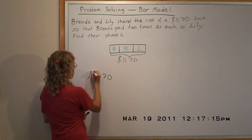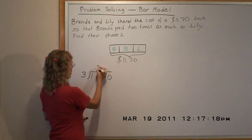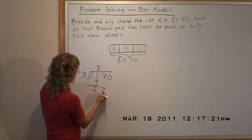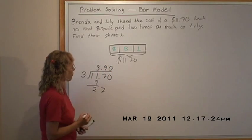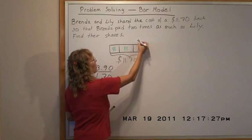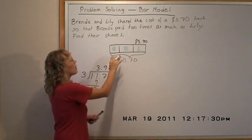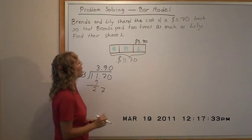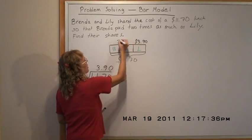Very useful. Three goes into 11 three times. Subtract — we get 2, bring down the 7 to get 27, so nine times. So this part here is $3.90, and that's Lily's share. Brenda's part would be double that, which is $7.80.